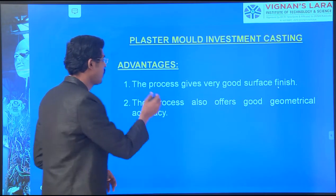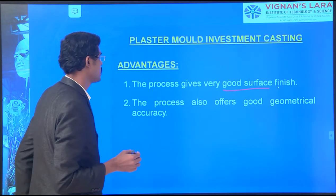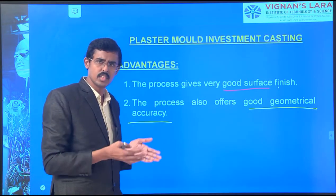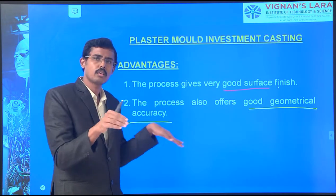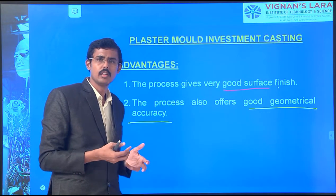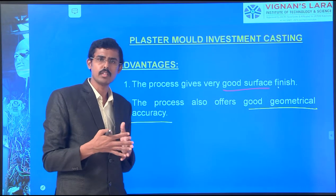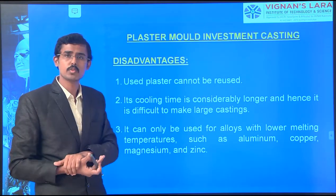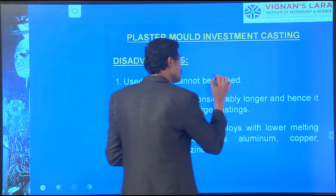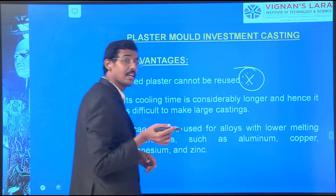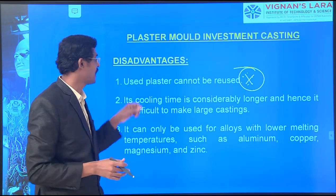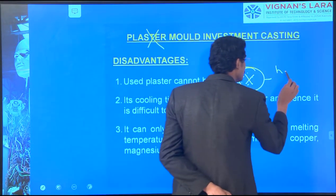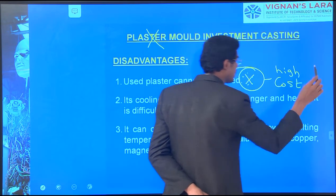What are the advantages? The process gives a very good surface finish and good geometrical accuracy. By shaking the plaster, we reach all corners, giving good accuracy objects. However, the disadvantages: the plaster cannot be reused - this is very important. Sand can be reused, slurry can be reused, but this plaster cannot be reused. It is waste, which means high cost.